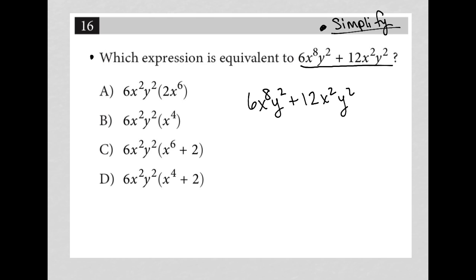In this case, what is the greatest common factor between 6 and 12? That would be 6 — that's my GCF. Then what's the greatest common factor between x to the eighth and x squared? That'd be x squared, which is the largest common factor between those two. And the greatest common factor between y squared and y squared is just itself: y squared.